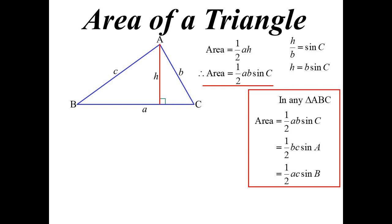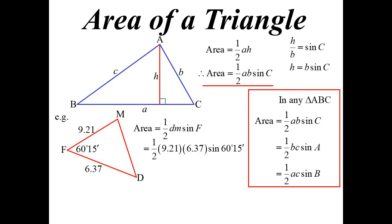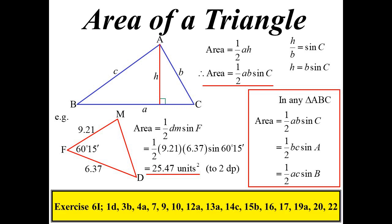That's the information you need to find the area of a triangle. So for this one it would be a half dm sine F. Begin, and of course we're talking about an area so it's unit squared, and I did it to two decimal places on that one. So there's a recap of our sine rule and area of a triangle.